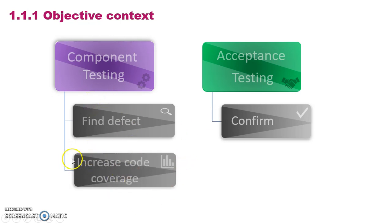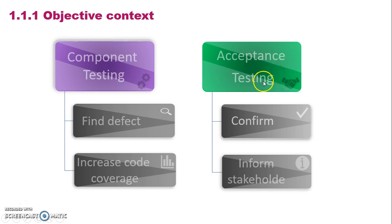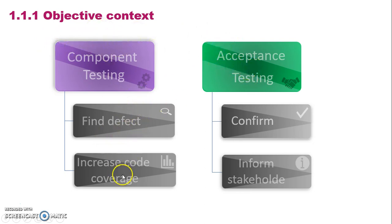In component testing, the objective is also to increase code coverage — testing as many test cases as possible before giving it to the customer. In acceptance testing, the main objective is to provide all information to the stakeholder as early as possible. So though the objectives we studied are all common, for different types of testing they differ — finding defects and increasing code coverage for component testing, versus confirming and providing information to stakeholders for acceptance testing.